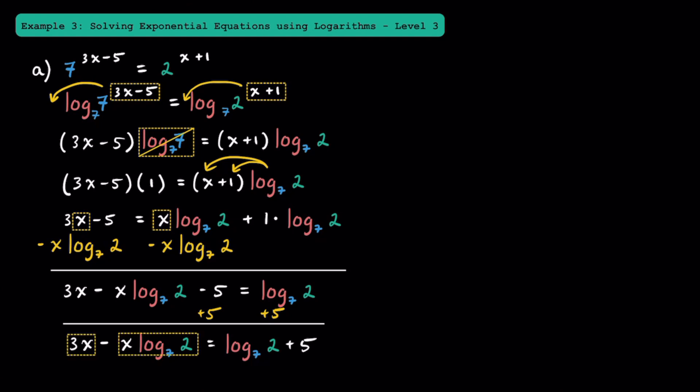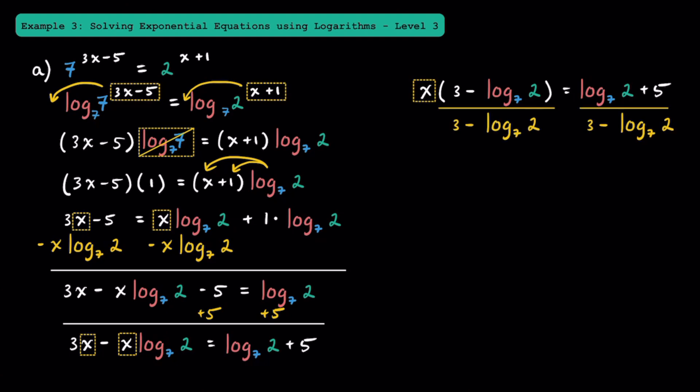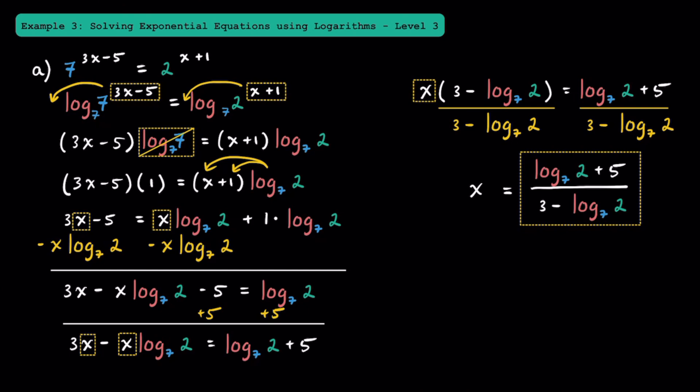Since both terms on the left side have a common factor of x, we can factor out the x and write x times the quantity of 3 minus log base 7 of 2 is equal to log base 7 of 2 plus 5. To isolate x, we divide both sides by 3 minus log base 7 of 2, and we get x equals log base 7 of 2 plus 5 over 3 minus log base 7 of 2. While this is the exact answer, you can plug it into a calculator and you'll find that x is approximately equal to 2.026.